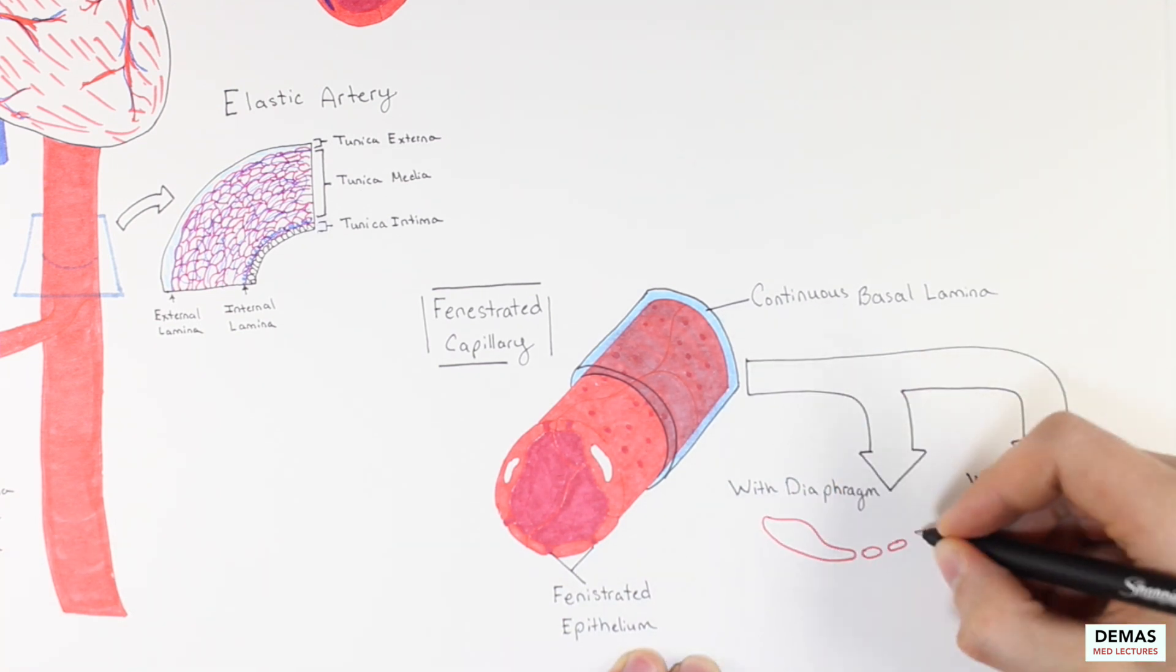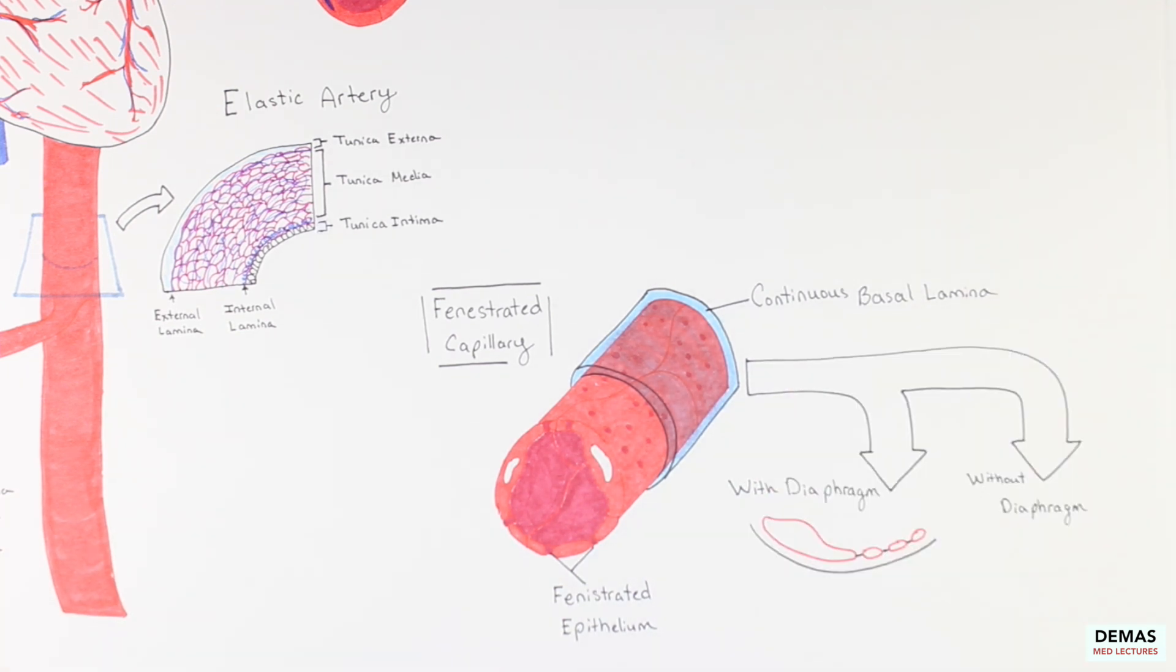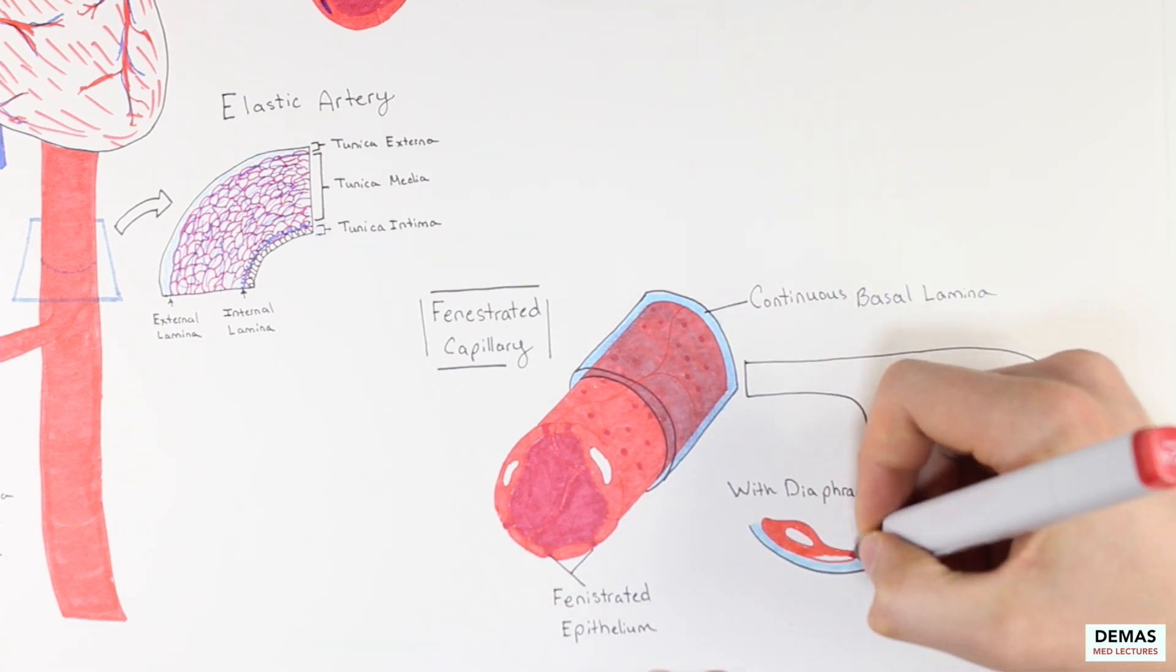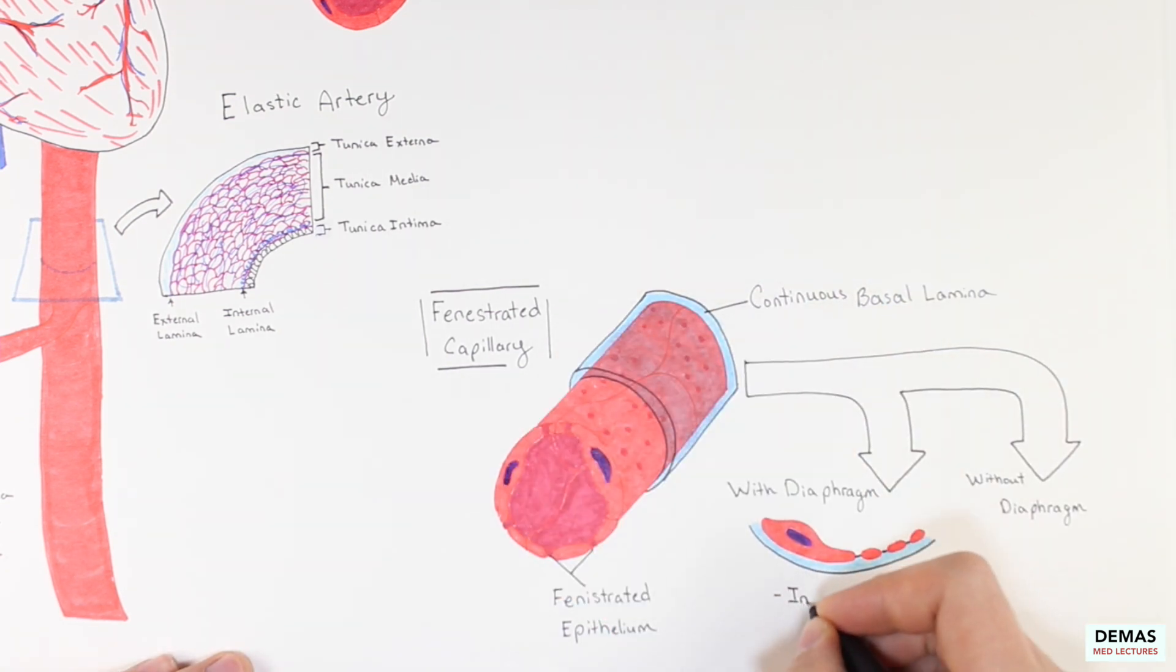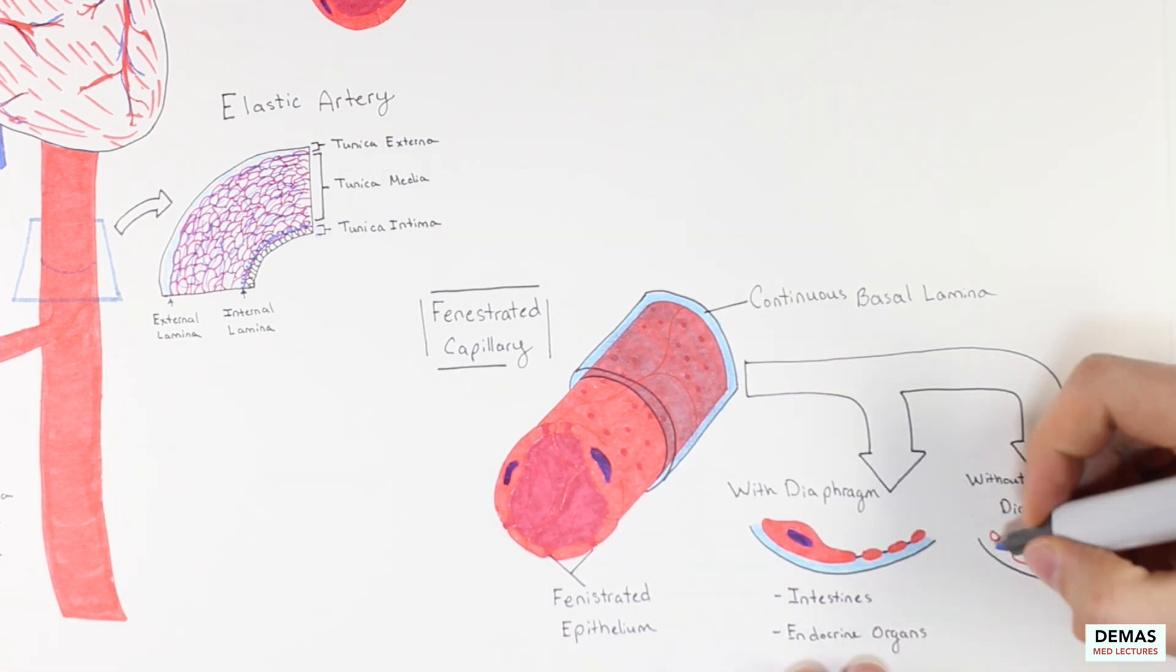The diaphragms shown here are thinner than the plasma membrane and can be found covering the pores of the endothelium in fenestrated capillaries.